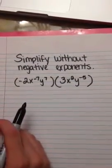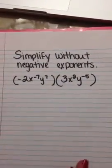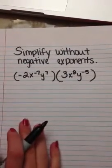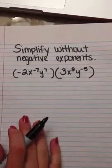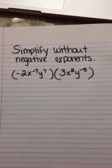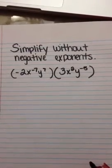I'm going to teach you how to simplify without negative exponents. One example I have here is -2x to the -7 times y to the 7th, multiplied by 3x squared y to the -5th.